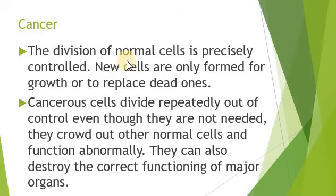Normally, the division of normal cells is under control. New cells are only formed where there is a need for growth or replacement of dead cells. For example, red blood cells have a lifespan of up to 120 days. After 120 days, the older cells undergo apoptosis. Their components are distributed, the bone marrow is activated, new cells are released, and the immune cells are regulated accordingly.